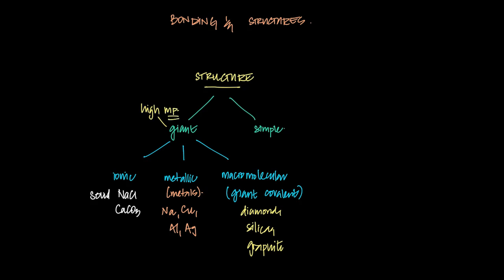Simple structures have low melting and boiling points. Generally, these happen to be gases, and some can be liquids — liquids and gases mainly — while giant structures at room temperature are solids. Giant structures generally have high melting points. There are some metals which have low melting points — those are exceptions, things like mercury and group one metals — but we still call them giant structures.